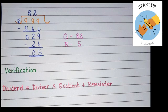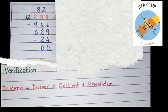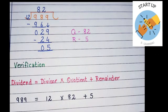Let's insert values into it. Here our dividend is 989, divisor is 12, quotient is 82, and remainder is 5. So we will arrange it accordingly: 989 = 12 × 82 + 5. First of all, we will multiply 12 by 82.